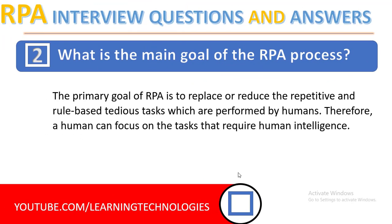Next question: what is the main goal of RPA? The primary goal of RPA is to replace or reduce the repetitive and rule-based tedious tasks which are performed by humans. Therefore, a human can focus on the tasks that require human intelligence.